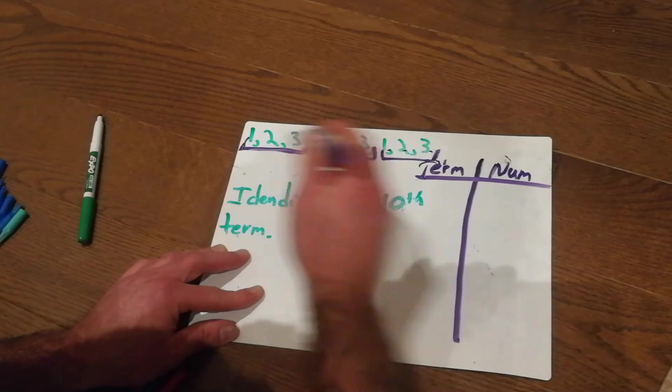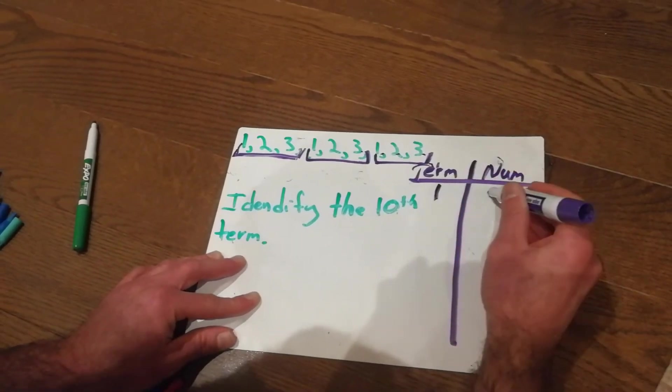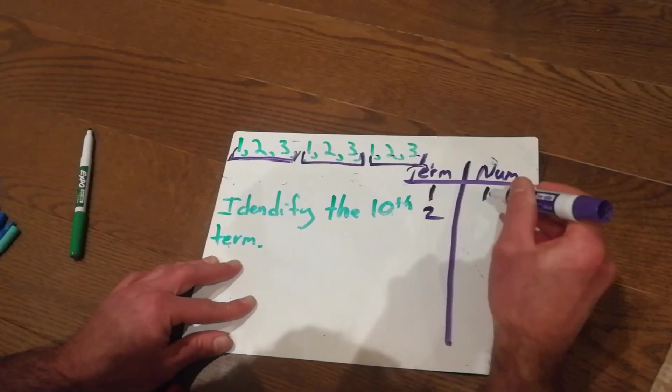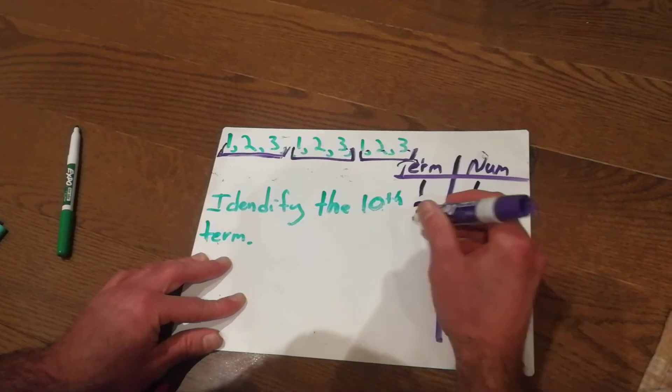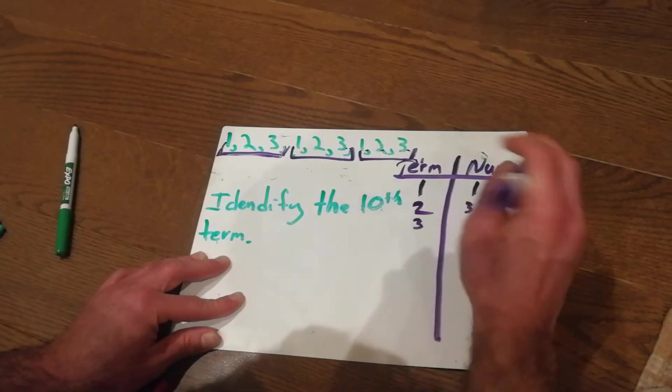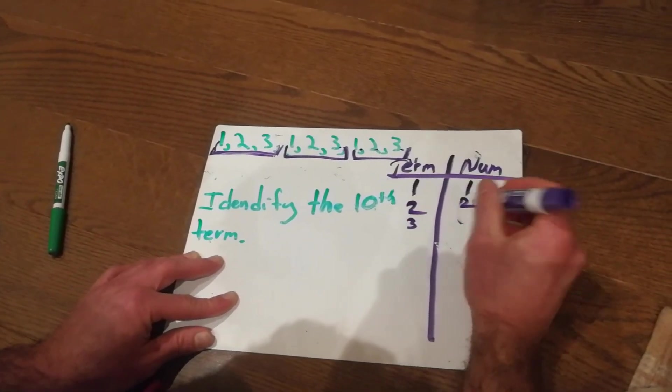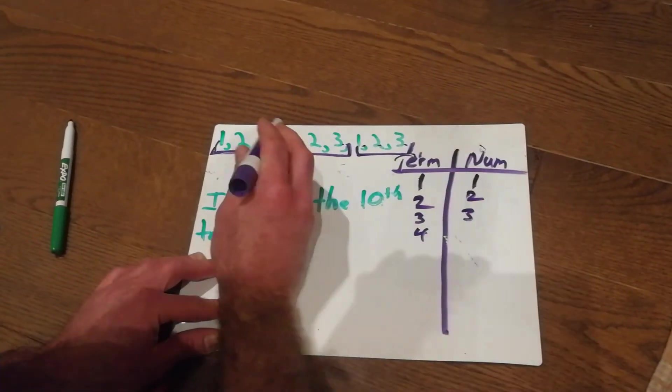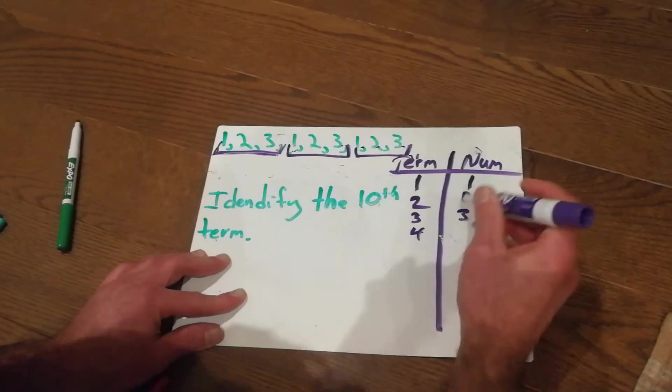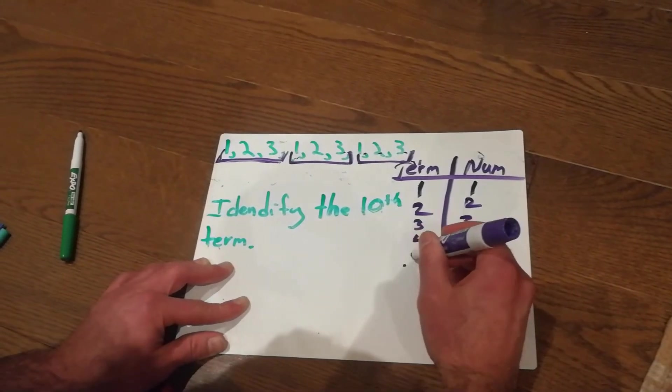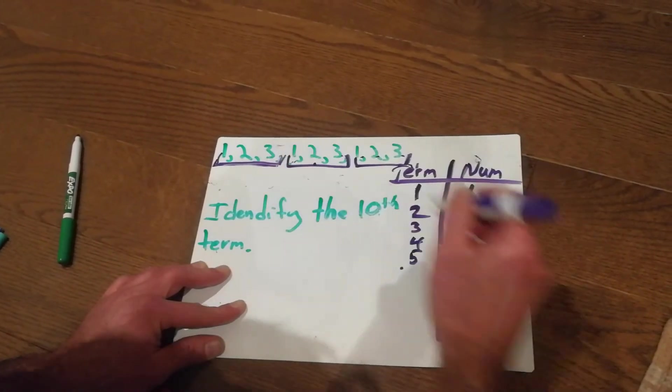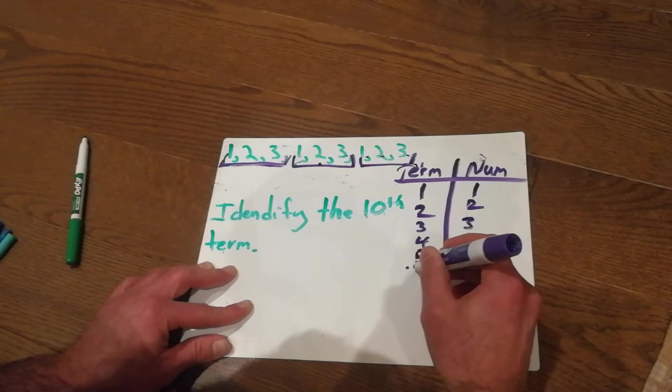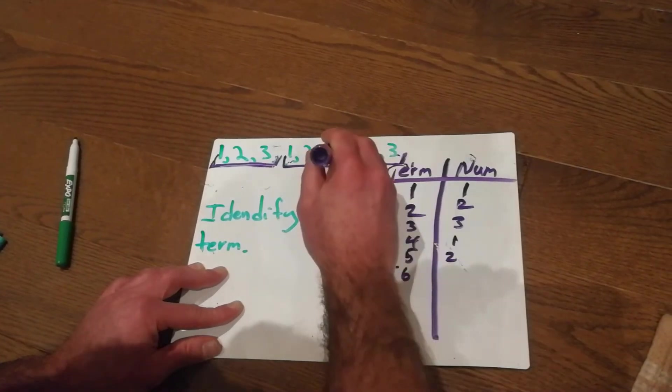So, term 1 is number 1. Term 2 is number 3. Term, oops, number 2. Term 3 is number 3. Term 4 is number 1. Term 5 is number 2. Term 6 is number 3.